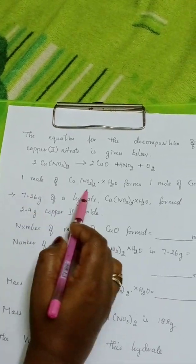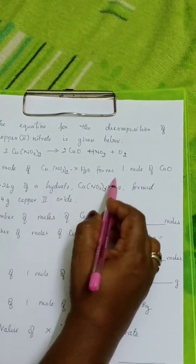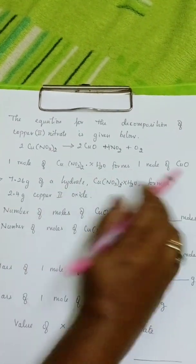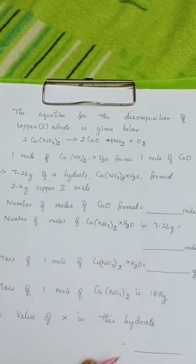And also the information given in the question, 1 mole of hydrated copper nitrate forms 1 mole of copper oxide. I mean this dissociates into copper oxide and nitrogen dioxide and oxygen.